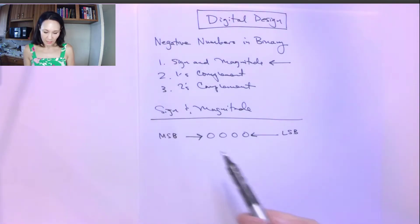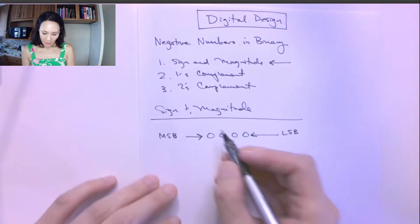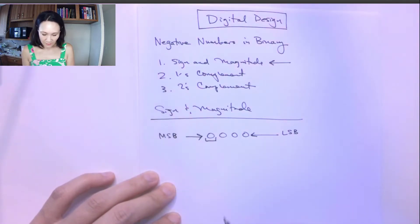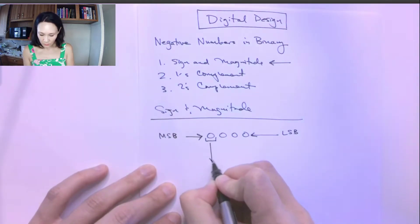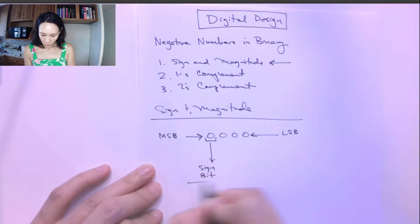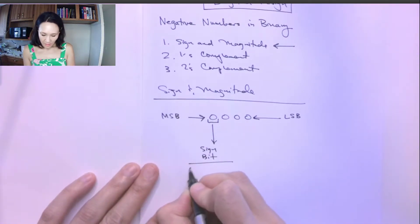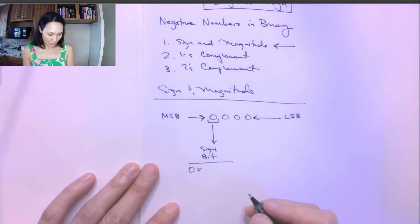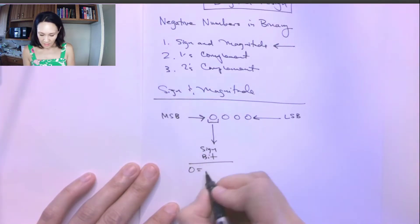Okay, so for the sign and magnitude convention, this most significant bit here is reserved for the sign bit. And the rules for the sign bit are: if this sign bit is a zero, that means the number will be positive. If the sign bit is a one, that means it will be negative.